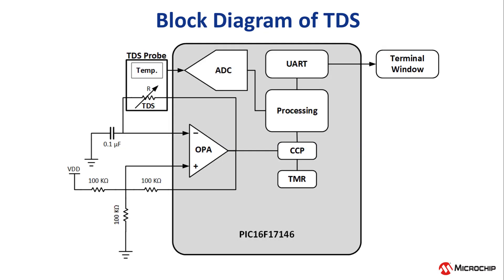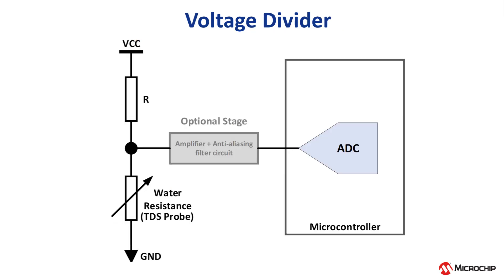Now that we've had a good introduction on what and how TDS works, let's dive right into how this demo operates and the core independent peripherals that are used. One of the ways to measure water conductivity is to use a voltage divider. In this configuration, the conductive water acts as a variable resistor and the output voltage across the variable resistor can be measured using the analog to digital converter, or ADC. From the ADC's measurements, the TDS values can then be calculated. Using a voltage divider circuit to measure TDS not only provides a wide range of TDS values that can be measured, but minimal required circuitry is needed.